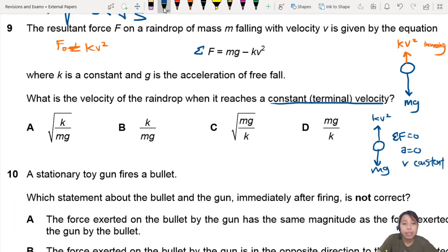So net force is 0, what does that mean? So that means I can equate mg equals kv squared. And you're trying to find v, right? So terminal velocity v_term equals mg over k. And don't forget to move the square root as well. So that would be square root of mg over k. That is question 9. Answer is C for this one. Next video, thank you.